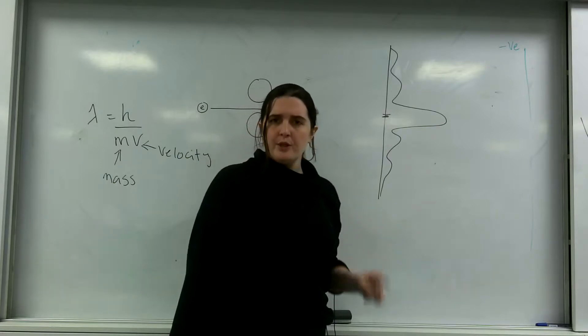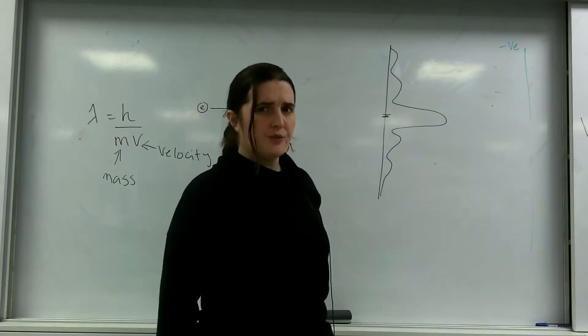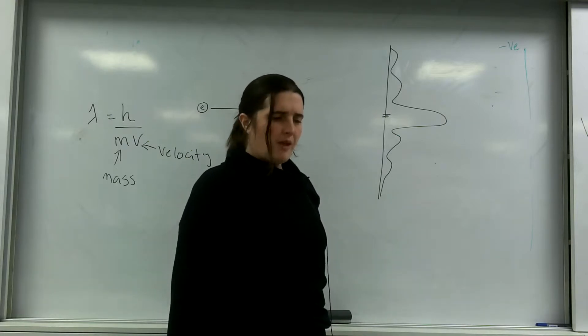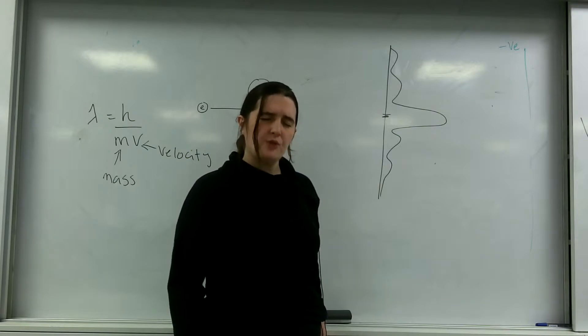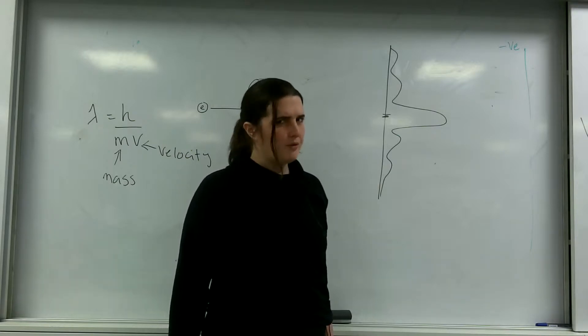This then posed the question that electrons can diffract. When they go through a gap, they diffract and they interfere with each other. That is a wave property.